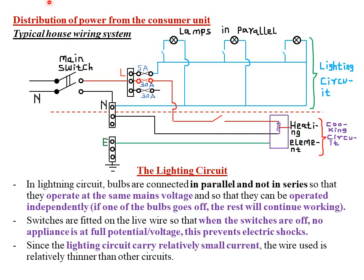Next we look at the distribution of power from the consumer unit — a typical house wiring system. From the main switch with its double poles (neutral and live), closing the main switch connects the neutral to the neutral bus bar and the live wire to all other electrical instruments. All switches are connected on the live wire to reduce the possibility of electrical shocks. The lighting circuit, rated about 5 amperes, has bulbs connected in parallel.